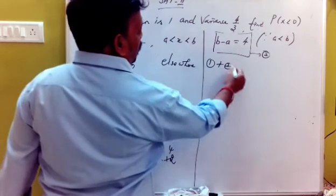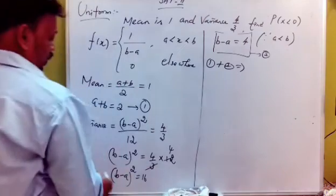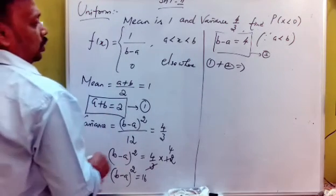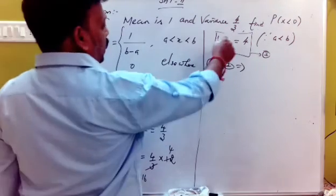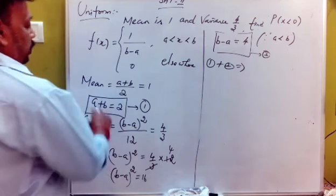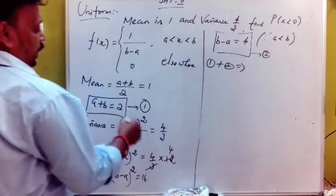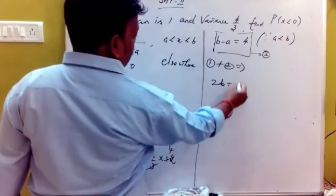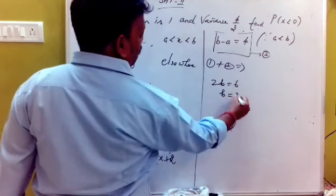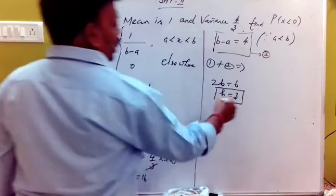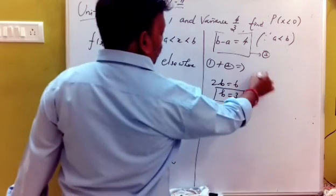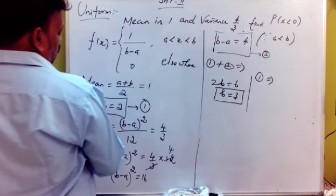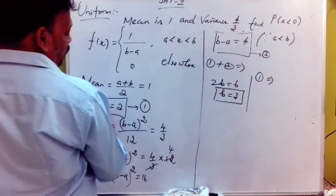Adding the two equations — a + b = 2 and b − a = 4 — we get 2b = 6, so b = 3, and then a = −1.